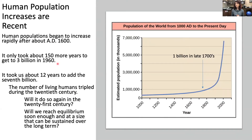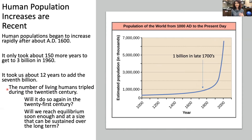Looking at the worldwide population, increases are pretty recent. Human populations began to increase rapidly after the year 1600, and we can see from the graph — with year on the x-axis and estimated population in thousands on the y-axis — that we really started to precipitously take off in the late 1700s, reaching just one billion at that time. Going from 1 billion to nearly 7 billion took only 150 more years. It only took about 12 years to add the 7th billion, and the number of living humans tripled during the 20th century.